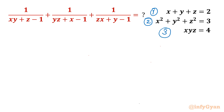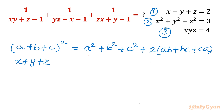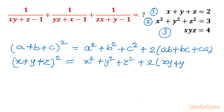We begin with the algebraic identity: (a plus b plus c) whole squared equals a squared plus b squared plus c squared plus 2 times (ab plus bc plus ca). In our context, we write (x plus y plus z) whole squared equals x squared plus y squared plus z squared plus 2 times (xy plus yz plus zx).